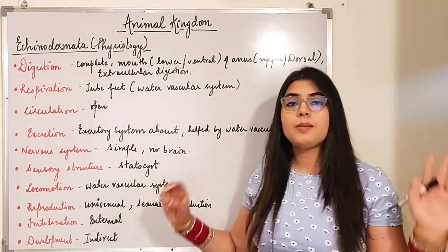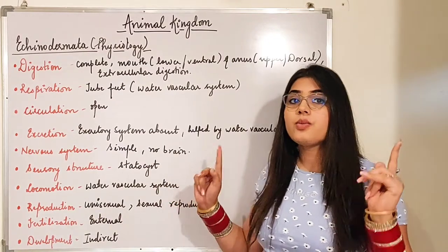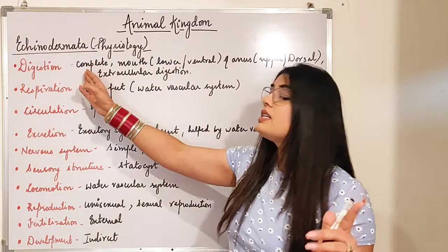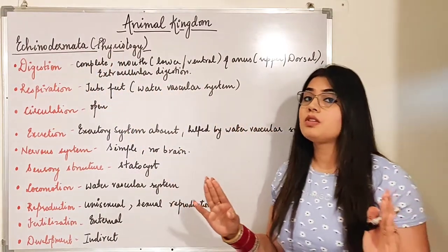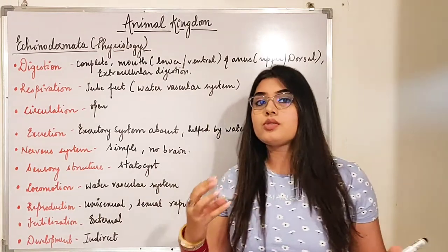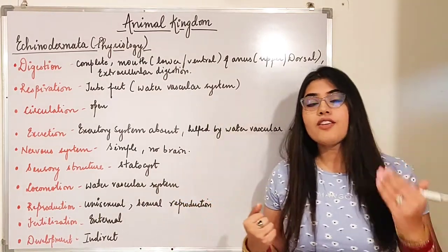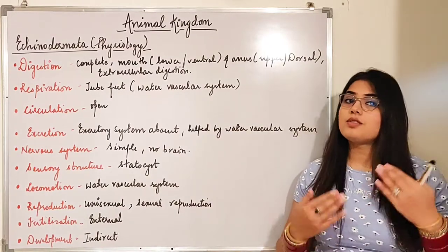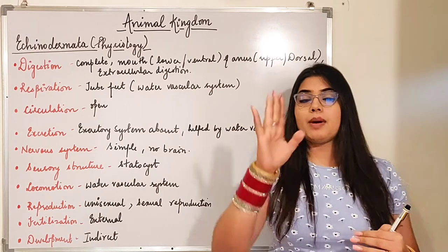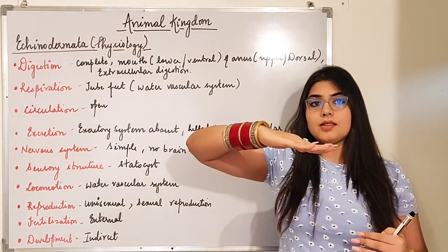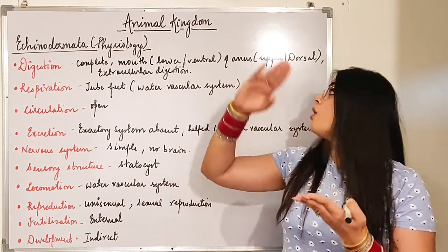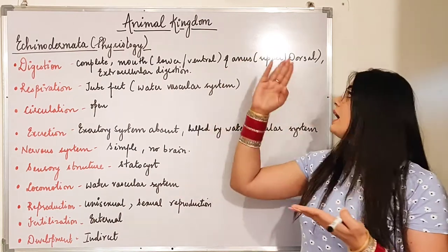The sequence remains the same — you have to learn it by heart. First one is digestion. The digestive system here is complete. In the previous video I told you they have tube within tube, that means they have a mouth and also an anus. If mouth and anus both are present, the digestive system will always be complete. Now in this body, the mouth is on the lower portion — that is the ventral side.